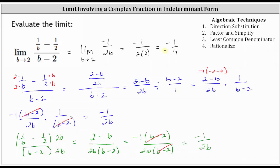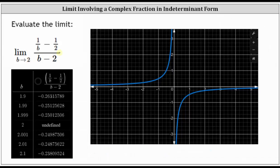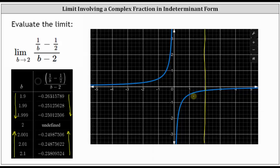Let's also verify this limit graphically and using a table of values. For the limit to exist, we must approach the same function value from the right and the left. Looking at the table, as we approach 2 from values less than 2, the function values approach negative 0.25, or negative one-fourth. As we approach 2 from values greater than 2, we also approach negative 0.25. Graphically, drawing a vertical line at b equals 2, we can see we are approaching the same function value of negative one-fourth from both sides, which verifies the limit is negative one-fourth.